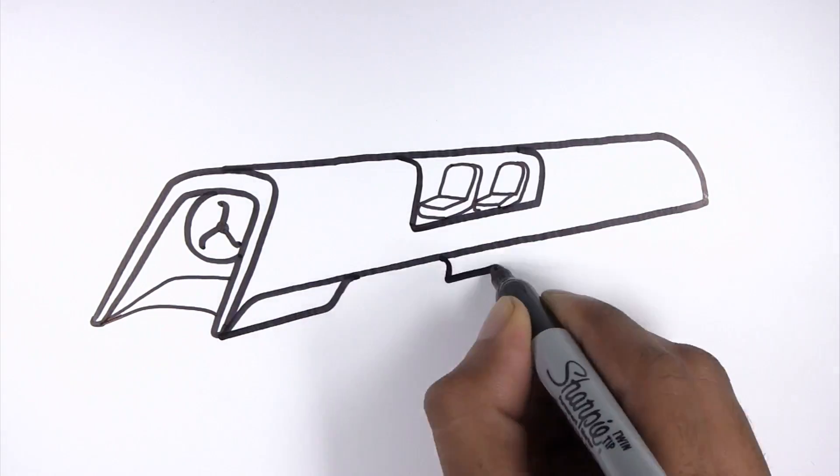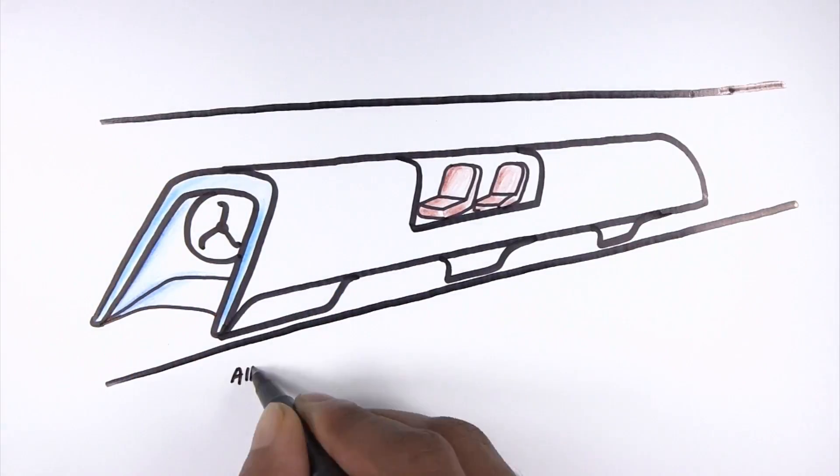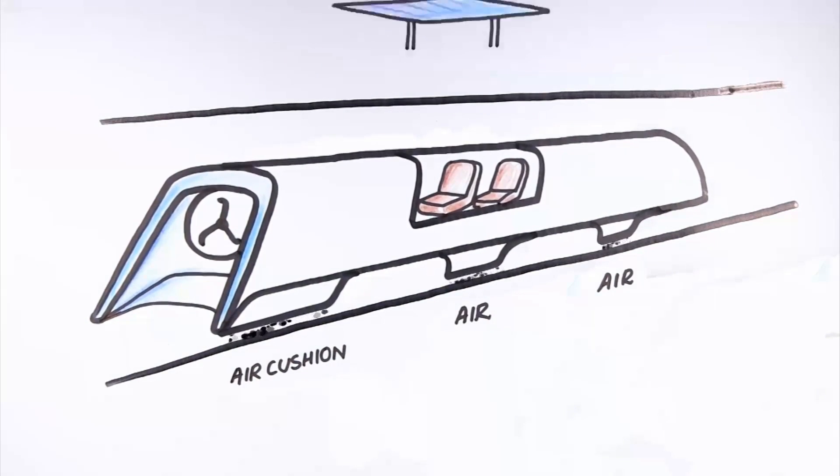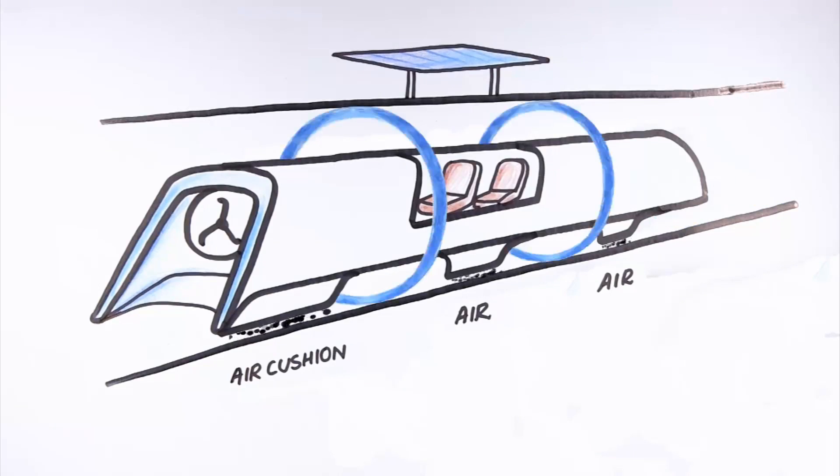This is mounted on a pair of skis. It will achieve levitation by an air cushion created by air being pushed through small holes in the skis. Electromagnetic field is generated making the pod float with very less drag.